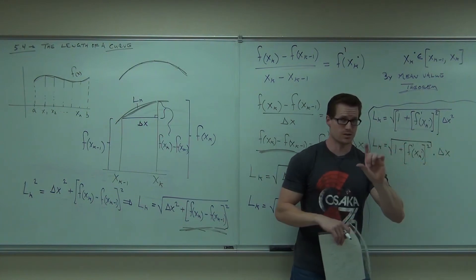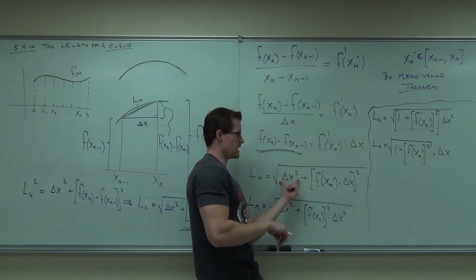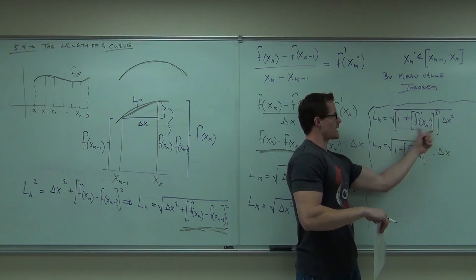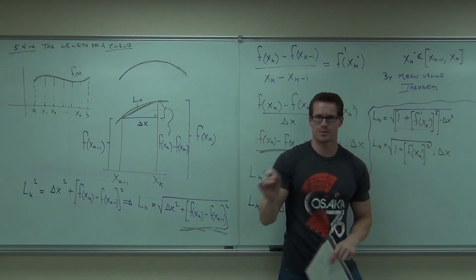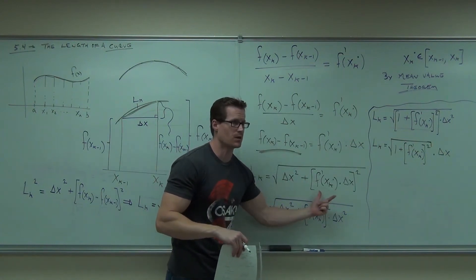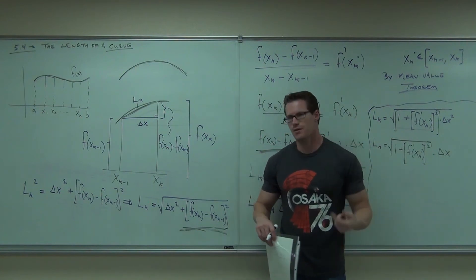The only reason why we can do this, ladies and gentlemen, please notice this, is because we were able to factor out the delta x squared from right here. We were able to factor it out, create a big bracket that's being multiplied. And you can split up multiplication. You can't split up addition. We could not have done it here. You can't just take a square root and take a square root. It doesn't happen. You have to factor it, split it off, do all that nonsense, and then you can do it.